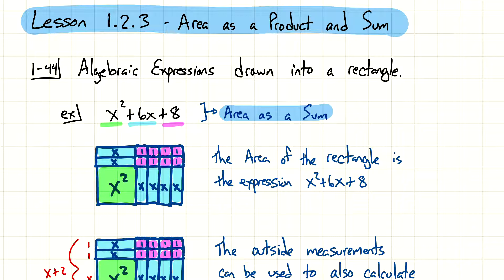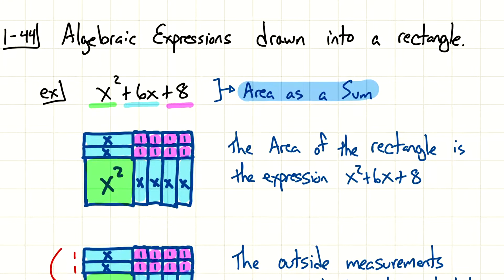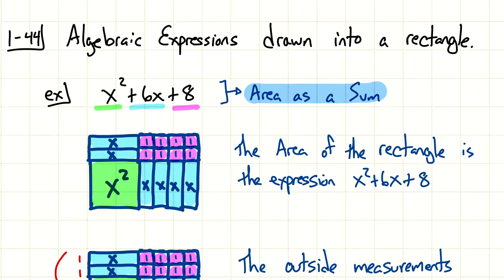In the example I'm using, it's going to be this expression here, x squared plus 6x plus 8. Now, this is what we refer to as area as a sum. So, like I said earlier, most of the time we don't think this is an area, but I'll show you with the algebra tiles.